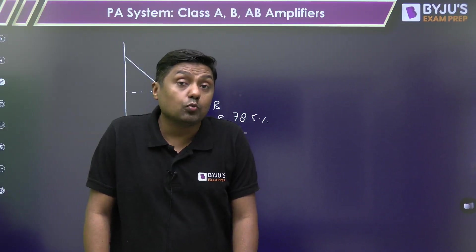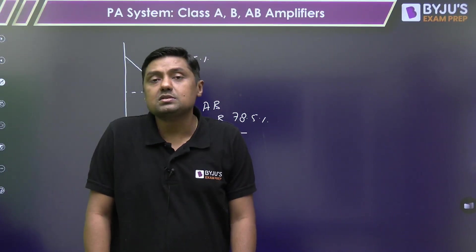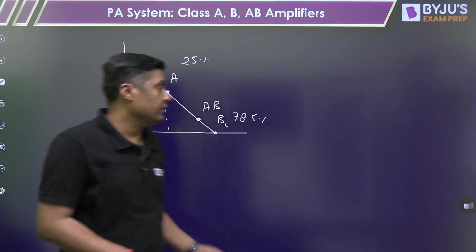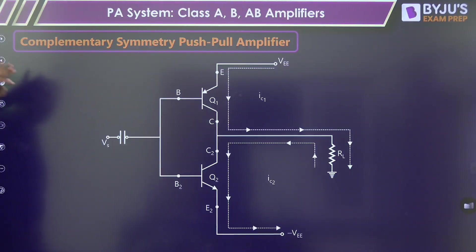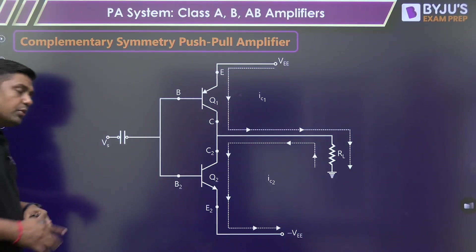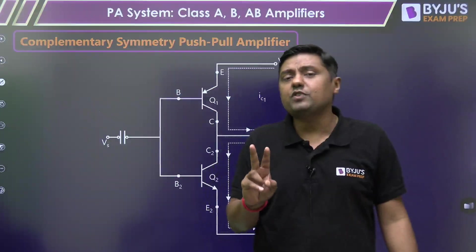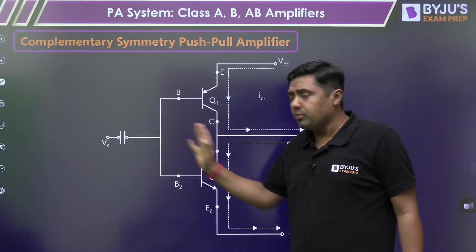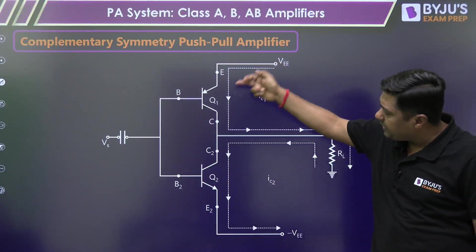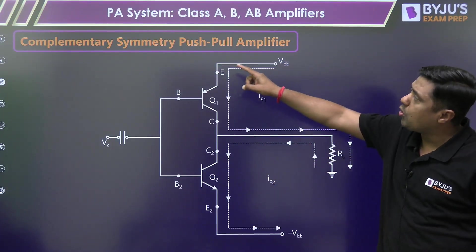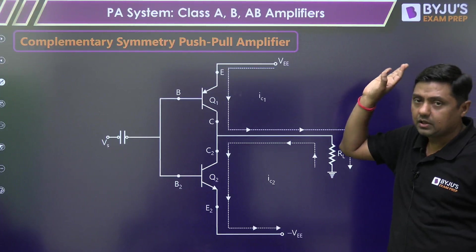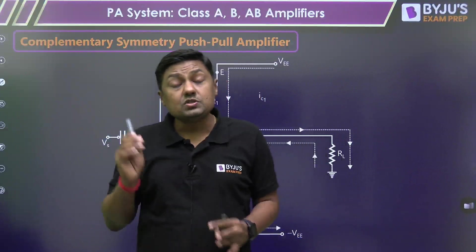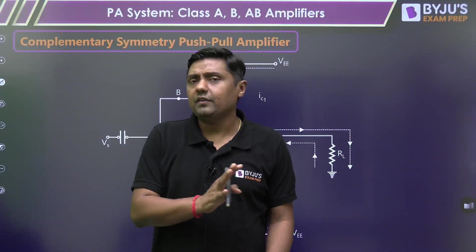We also want to reduce harmonic distortion. In class B and class AB, we can reject second harmonic distortion. This is a complementary symmetry push-pull amplifier. When using the same type of transistors — NPN, NPN — we need a transformer. To remove the transformer, we use one PNP and one NPN transistor, which is why it is called a complementary symmetry push-pull amplifier. The characteristics of both transistors are the same, and it is the most popularly used power amplifier.